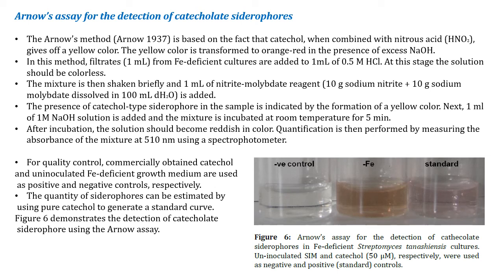The mixture is shaken briefly, then 1 ml of nitrate-molybdate reagent (10 g sodium nitrate plus 10 g sodium molybdate dissolved in 100 ml distilled water) is added. The presence of catecholate-type siderophore is indicated by a yellow color. Then 1 ml of 1 M NaOH is added and the mixture is incubated at room temperature for five minutes, after which the solution becomes reddish.